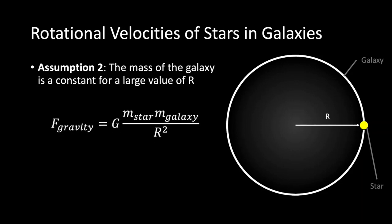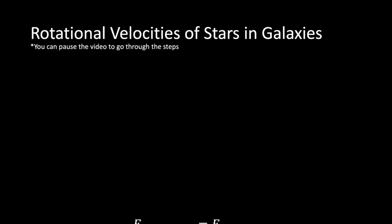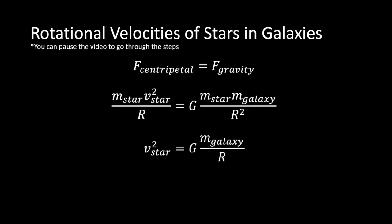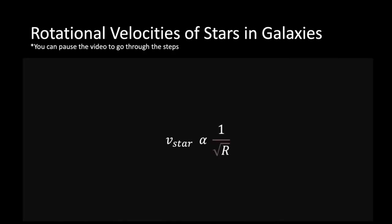Now, we can use the equation for gravitational force and equate it to the equation for centripetal force. After some rearranging, you should arrive at the following relation. The velocity of the star is inversely proportional to the square root of the distance from the center of the galaxy.